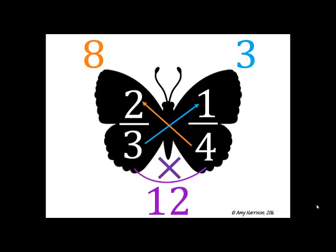We multiply the diagonal 4 times 2 to get 8, the diagonal 3 times 1 to get 3, and the denominators 3 times 4 to get 12.